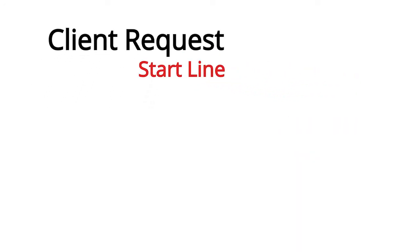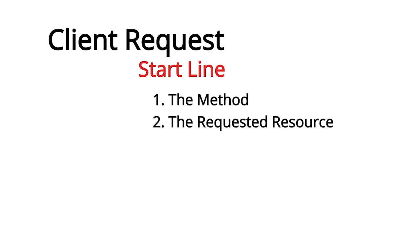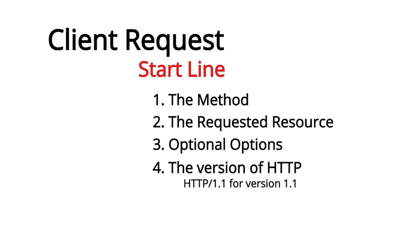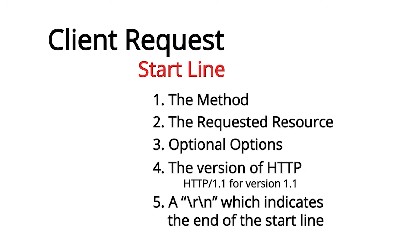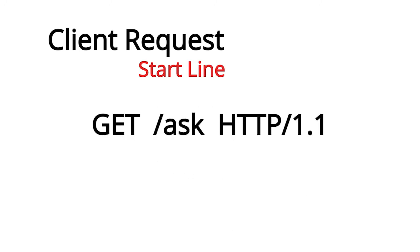An HTTP client request begins with the start line, which is made up of five elements: the method, the requested resource, the optional options, the version of HTTP that will be used — for HTTP 1.1, that will always be HTTP/1.1 — and finally a \r\n which indicates the end of the start line. Here's an example: GET /ask HTTP/1.1. The method is GET, the resource is /ask, and the version is HTTP/1.1. The library will take care of the \r\n for you automatically.